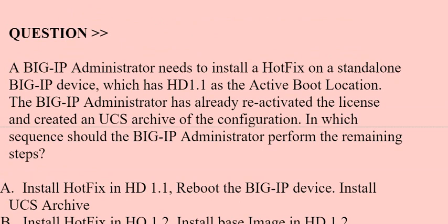Next question: A big IP administrator needs to install a hot fix on a stand-alone big IP device which has HD 1.1 as the active boot location. The big IP administrator has already reactivated the license and created a UCS archive of the configuration. In which sequence should the big IP administrator perform the remaining steps?